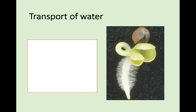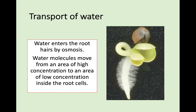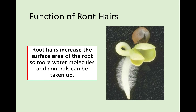Water enters the roots by osmosis. Looking at this picture on the right, a root coming out of a newly growing seed has all these little hairy bits called root hairs. The purpose of root hairs is to increase surface area - if you increase surface area, you take in more water. Osmosis is the movement of molecules from an area of high water concentration to an area of low water concentration, which would be the root cells. The more root hairs, the more water molecules and other minerals you'll be able to take up.